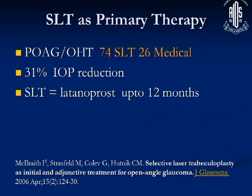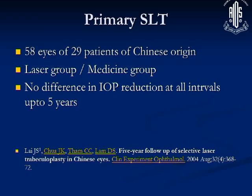Looking at SLT as a primary therapy, a lot of literature has come up. From the Caucasian population for POAG and ocular hypertension, SLT produced about 30% reduction in IOP — as effective as putting patients on latanoprost. IOP reduction was equal to a drop of latanoprost, consistently lower up to 12 months follow-up. From an eastern Chinese population, studies again showed the efficacy of laser trabeculoplasty.